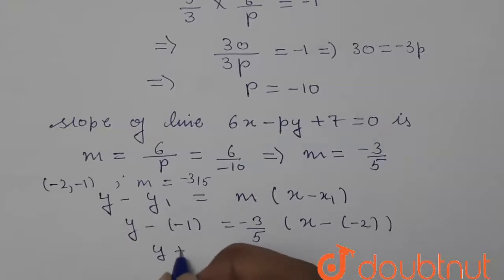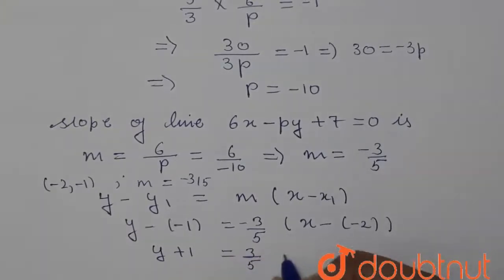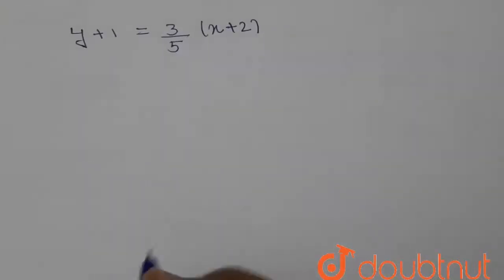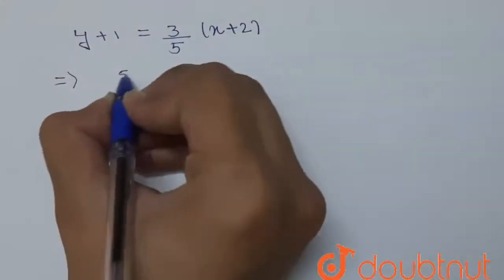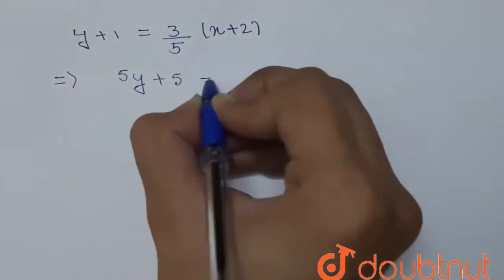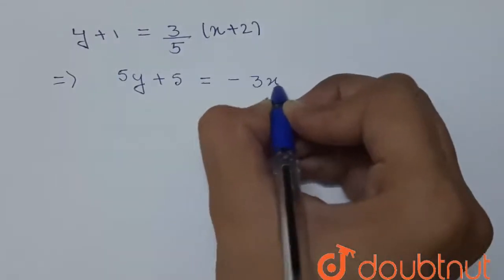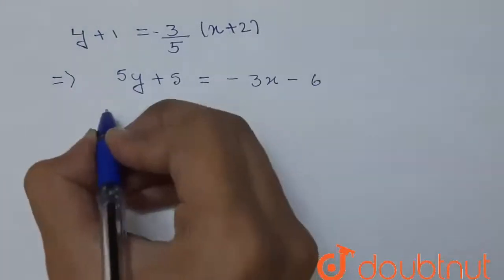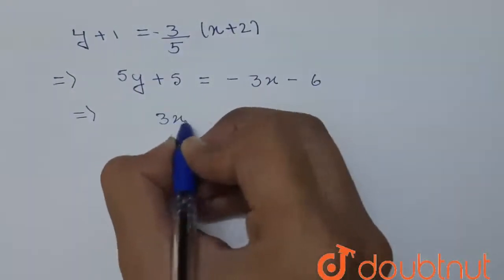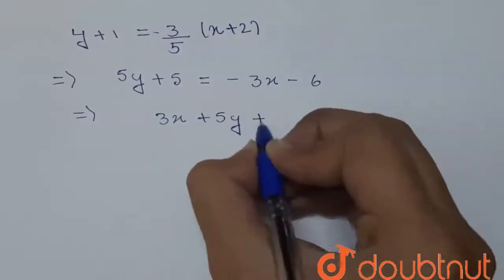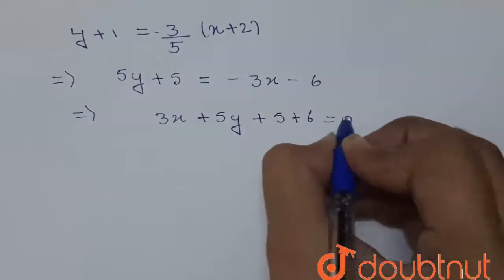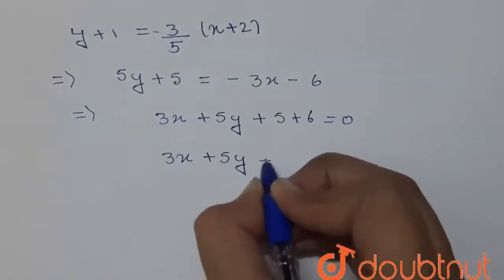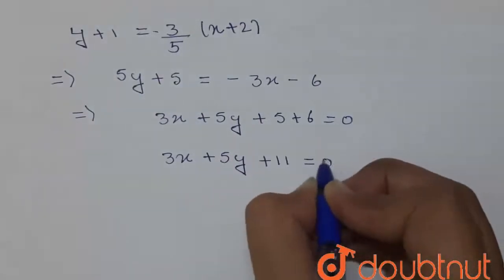So this becomes y + 1 = (-3/5)(x + 2). On further simplification, 5y + 5 = -3x - 6, which gives 3x + 5y + 5 + 6 = 0. Therefore, the equation of the line is 3x + 5y + 11 = 0.